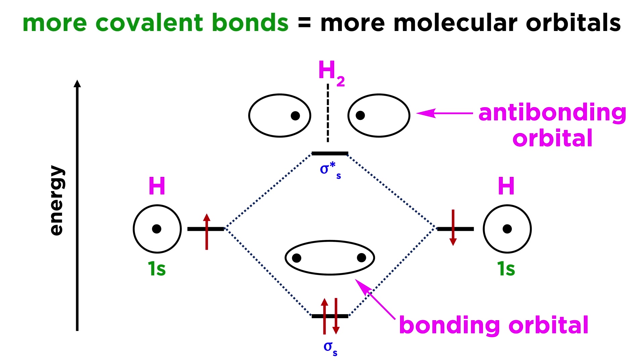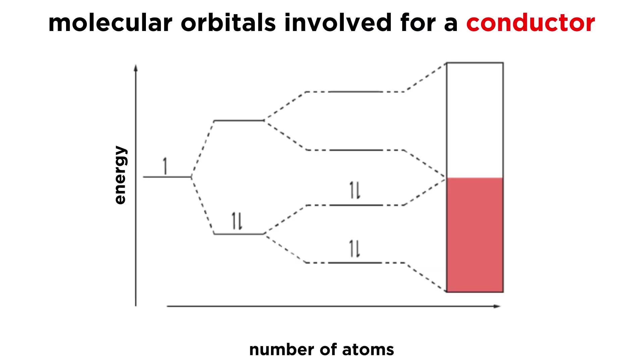Thus, as more and more covalent bonds form, more molecular orbitals will be generated to house all of these electrons. Here we can see the molecular orbitals involved as many atoms come together to make a network solid that will be a conductor.